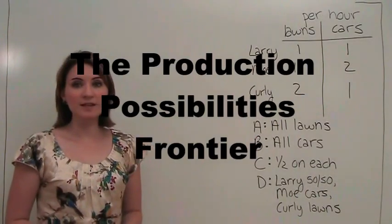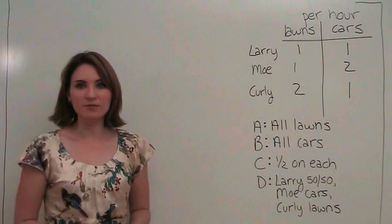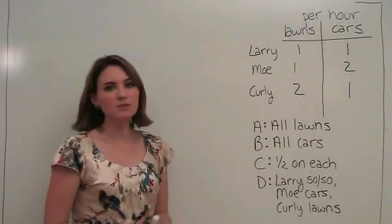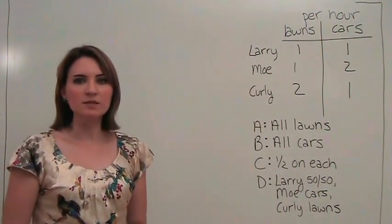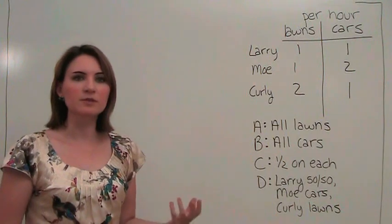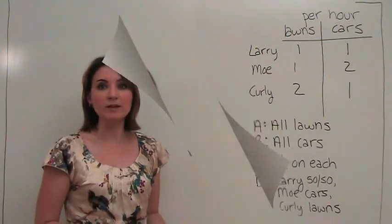Now we're going to talk about our first economic model, the production possibilities frontier. The production possibilities frontier tells us for an economy how much of different goods and services can be provided.